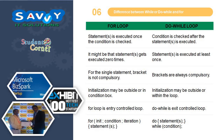Next is the difference between while or do-while and for. Discussing for loop versus do-while loop: in for loop, statements are executed once the condition is checked; in do-while, the condition is checked after the statement is executed. In for loop, it might be that statements get executed zero times; in do-while, statements are executed at least once. For a single statement in for loop, brackets are not compulsory; in do-while, brackets are always compulsory. In for loop, initialization may be outside or in the condition box; in do-while, initialization may be outside or within the loop. For loop is an entry-controlled loop; do-while is an exit-controlled loop. Additionally, for loop is a finite loop and do-while is an infinite loop.